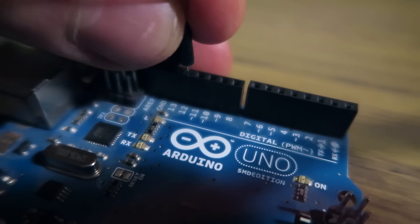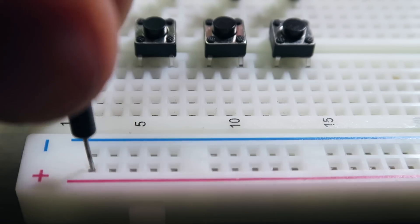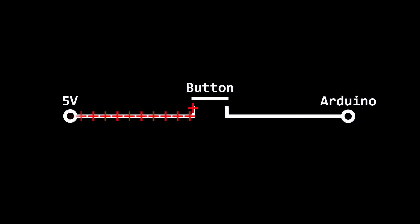One side of the button is connected to the Arduino, and the other side is connected to positive 5 volts. When the button is pressed, the gap will be bridged and the pin of the Arduino will rise to 5 volts. When the button is released, the voltage on the pin will stay at 5 volts because the charge has nowhere to go.